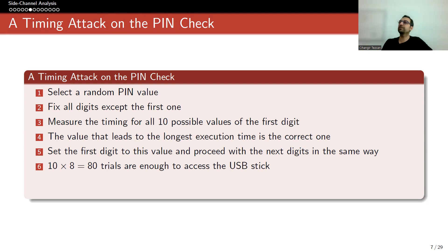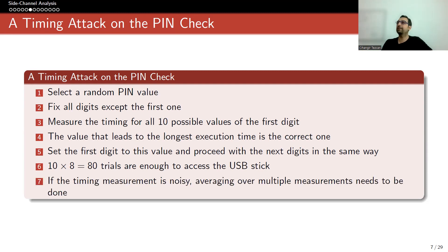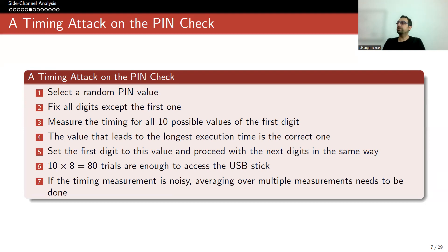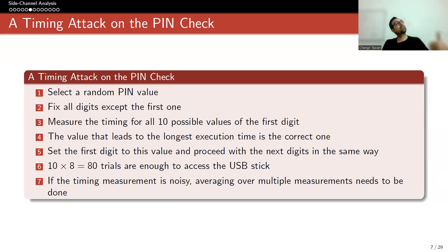As you can see, from 3 years, now it is 80 seconds. If the timing measurement is noisy, averaging over multiple measurements needs to be done — this is actually what we do in side channel attacks: you perform many times and get the average to see the correct value and get rid of the noise. So we haven't broken the system which requires an 8-digit PIN in the traditional sense — we broke the implementation where the algorithm first checks the first digit, then checks the second digit.